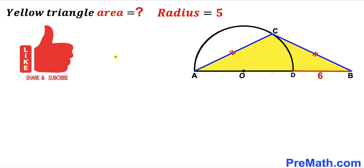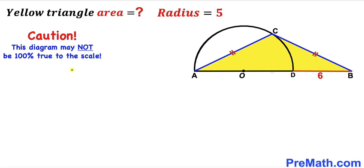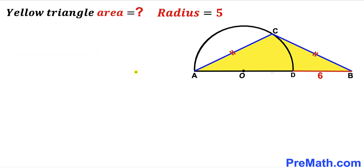Please don't forget to give a thumbs up and subscribe, and keep in mind that this figure may not be 100% true to scale. For our first step, we know the radius of this semicircle is 5, and likewise radius OD is 5 as well.